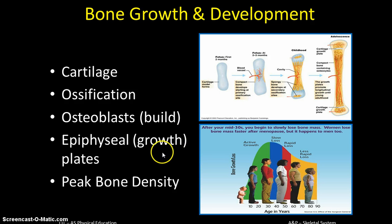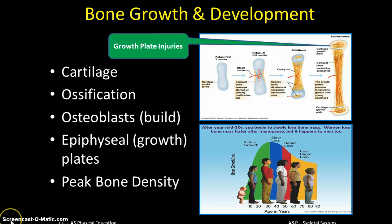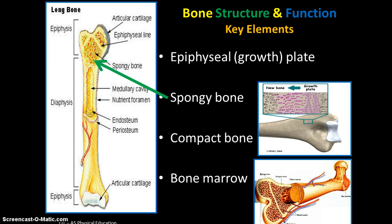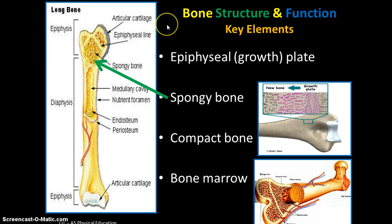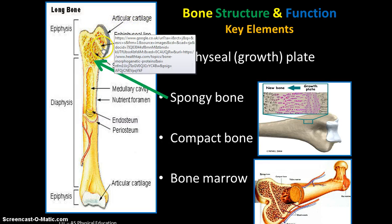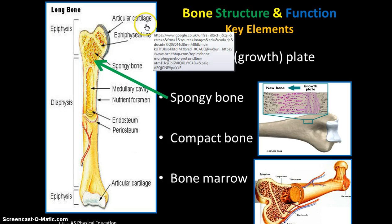Osteoblasts lay down bone cells at the growth plates, or proper name, epiphyseal plates. You need to understand this because later when we look at conditions of the bone, you can have problems with growth plates. As we said, peak bone density is really important, so we need to make bones as strong as possible when you're young. The epiphyseal plate is this line up here — that's where your osteoblasts basically make you grow and your bones get longer. I've heard about articular cartilage here. Yes, we'll look at that in just a moment when we look at a typical synovial joint.